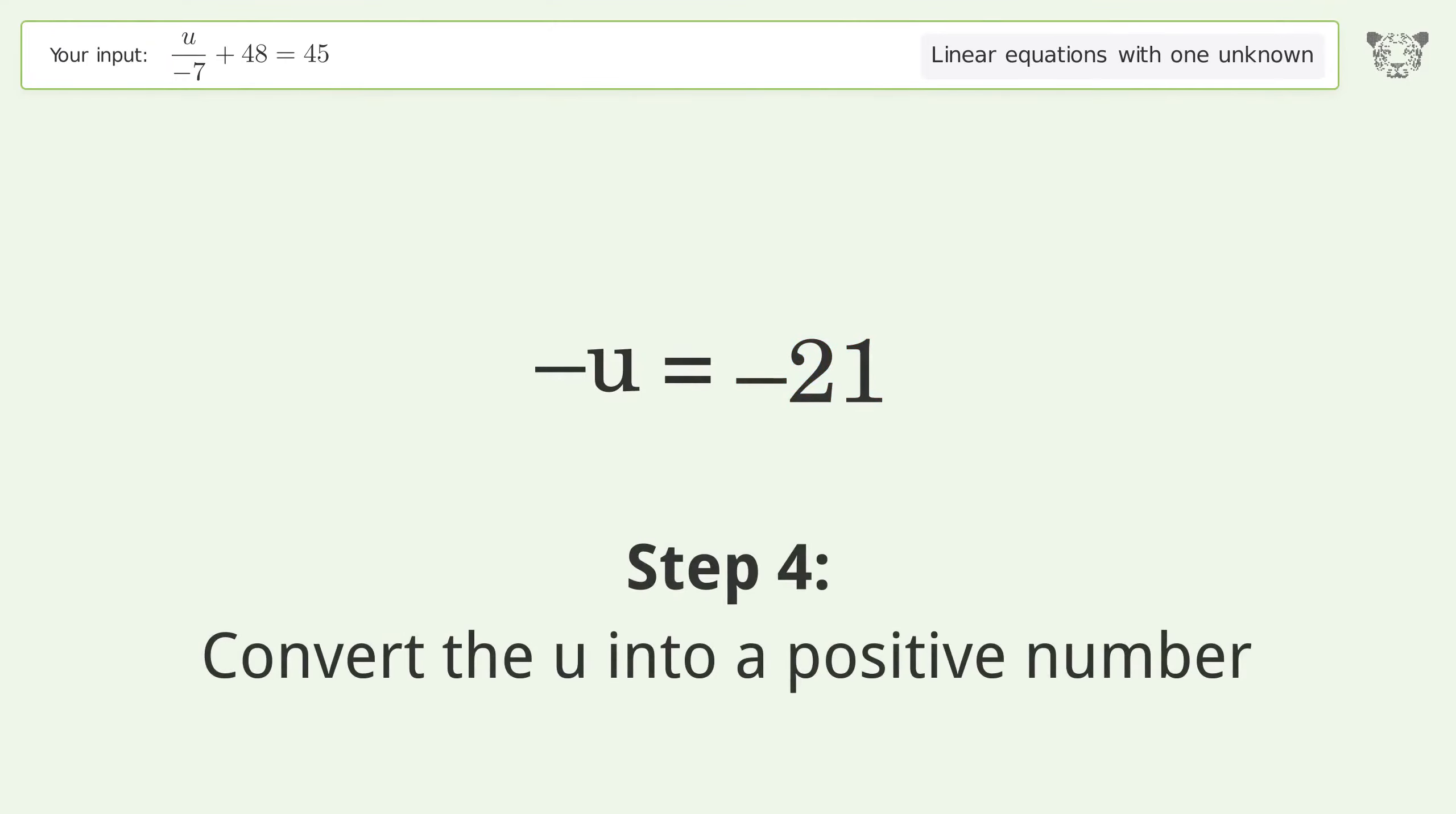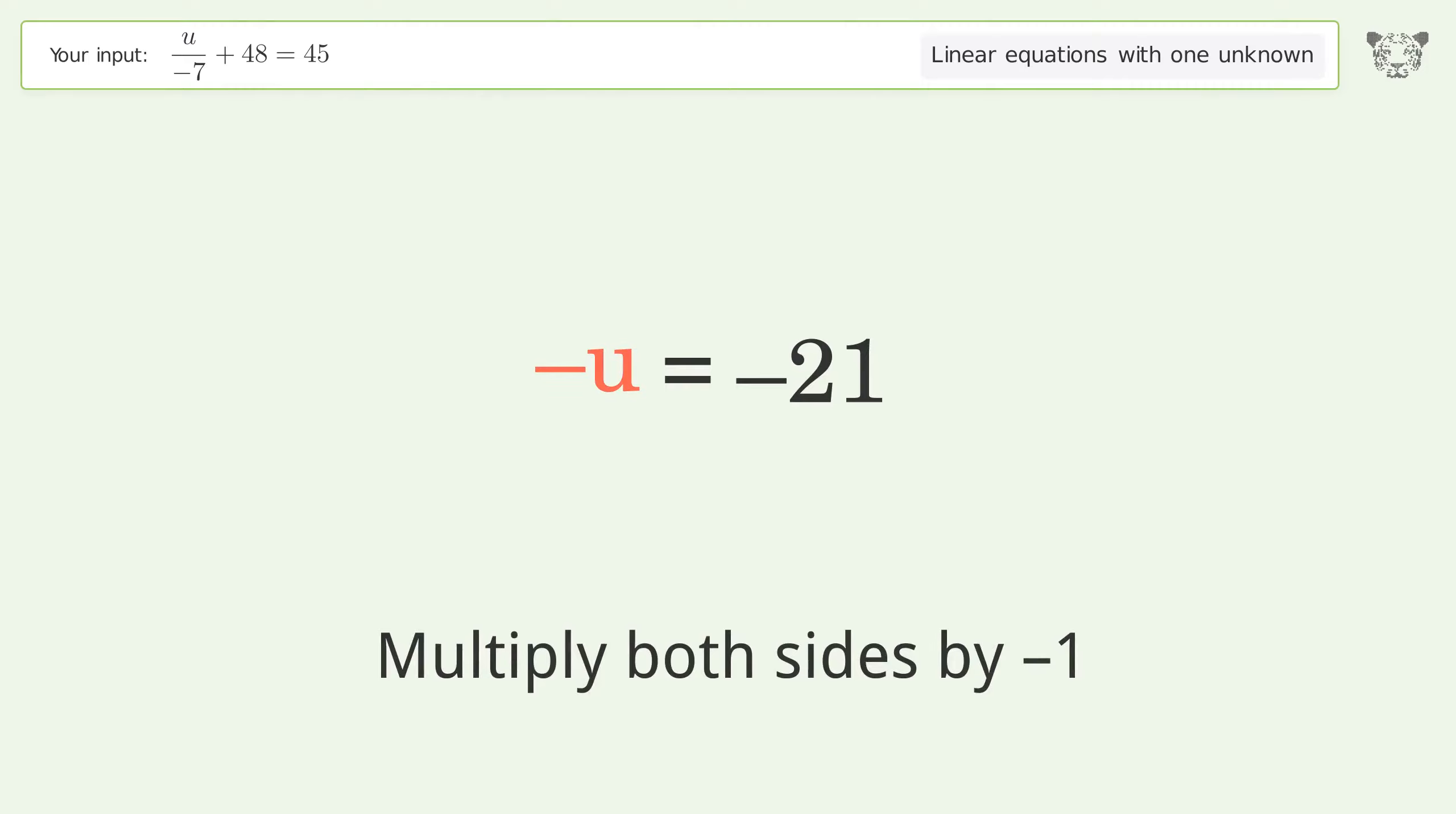Convert the U into a positive number. Multiply both sides by negative 1. Remove the 1s.